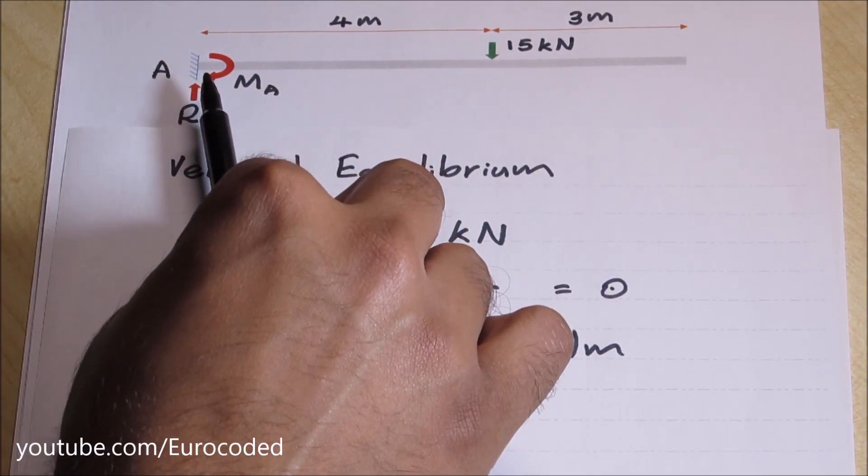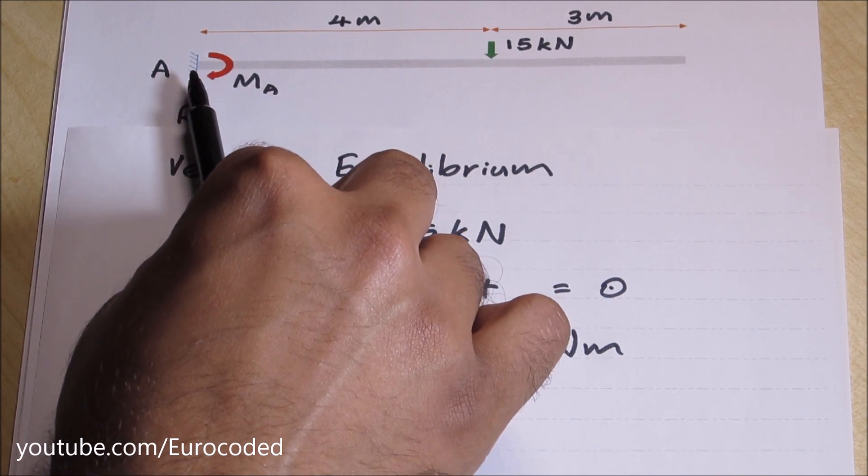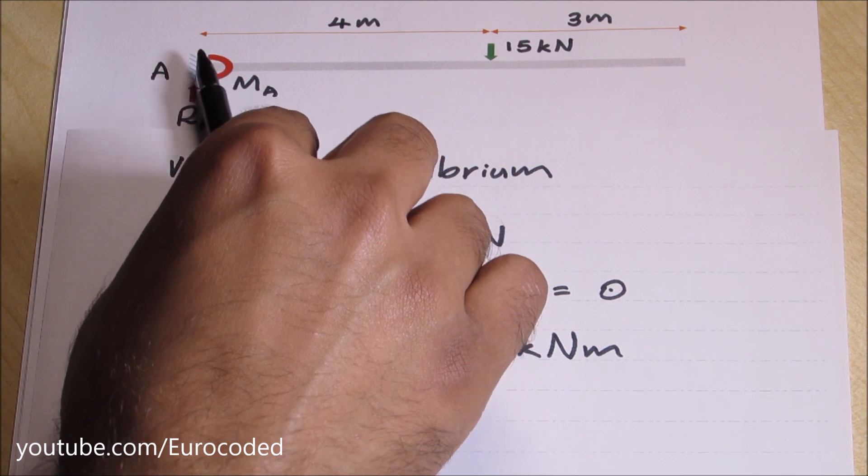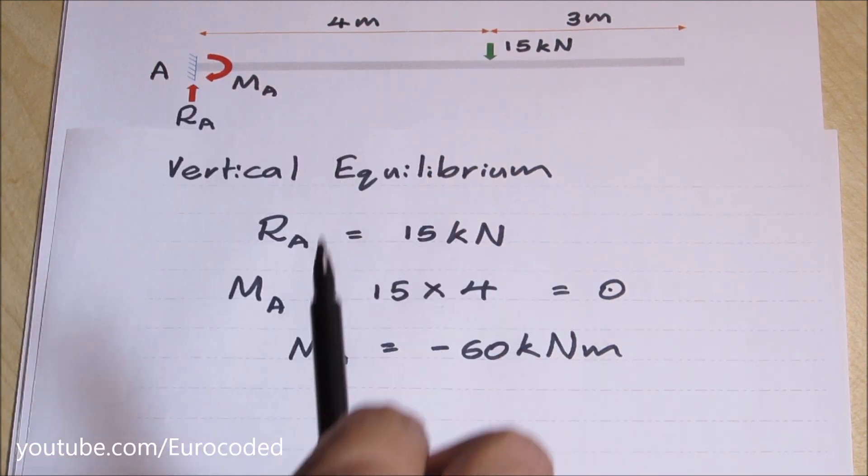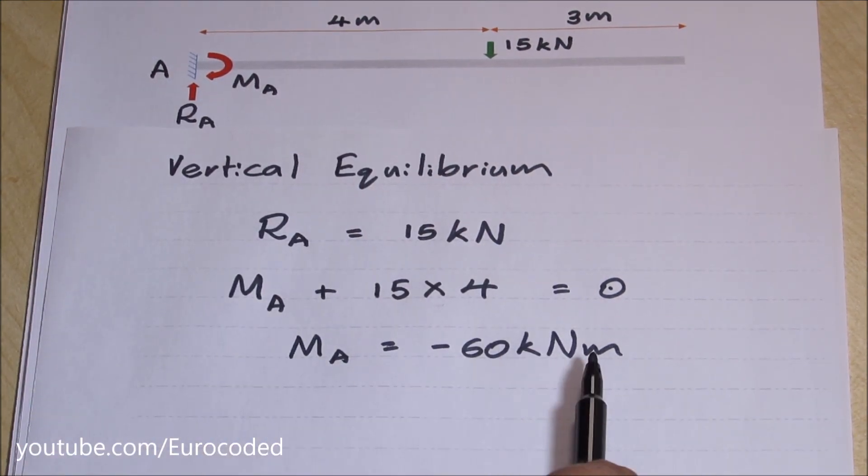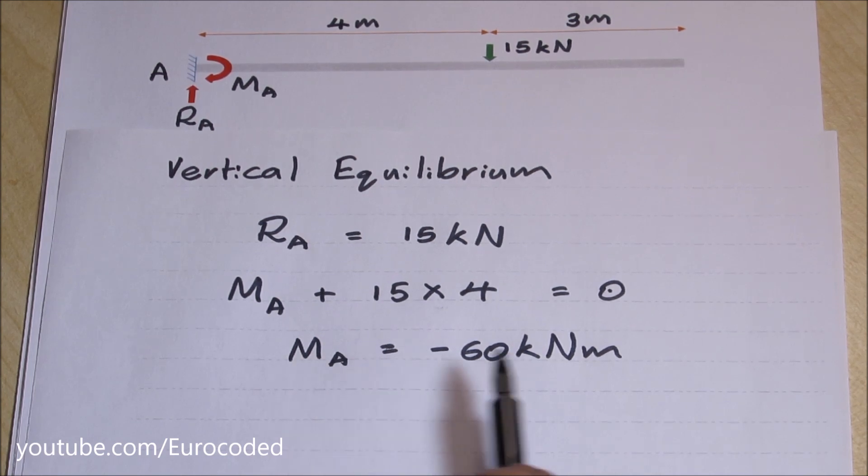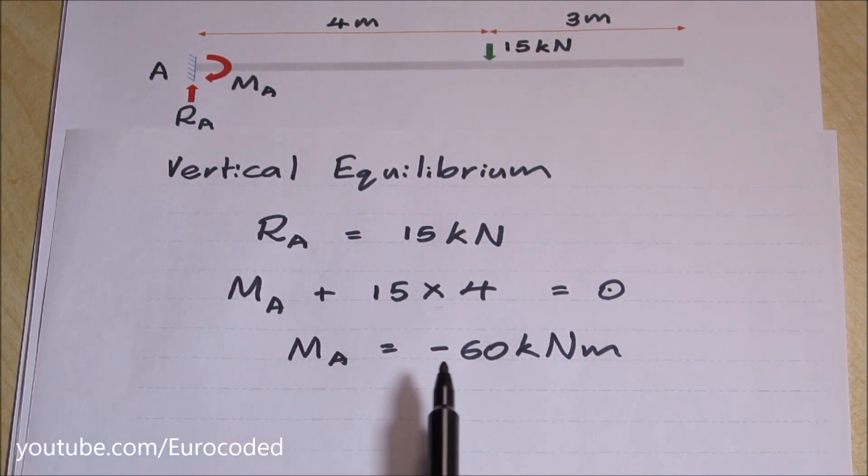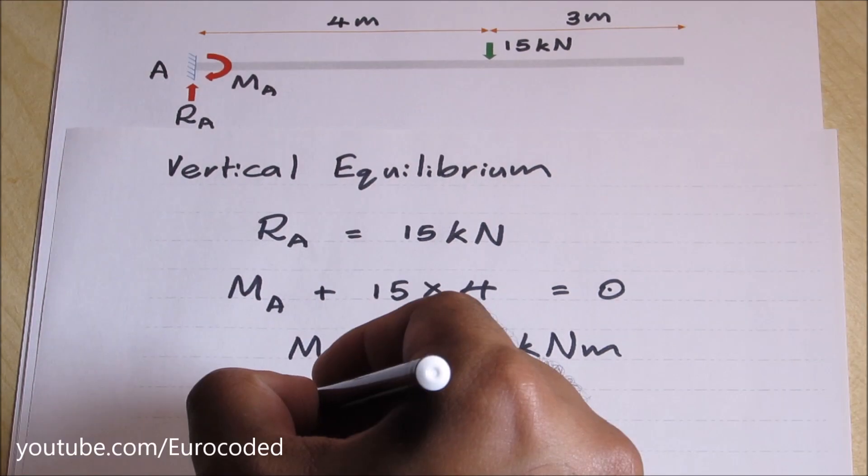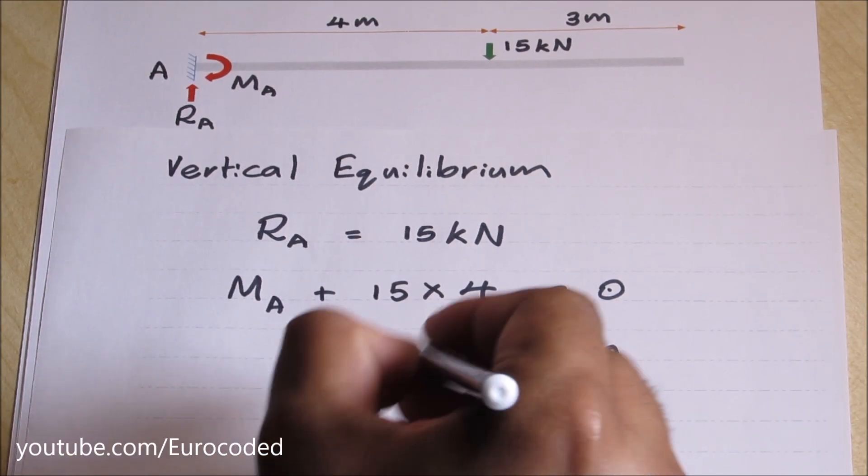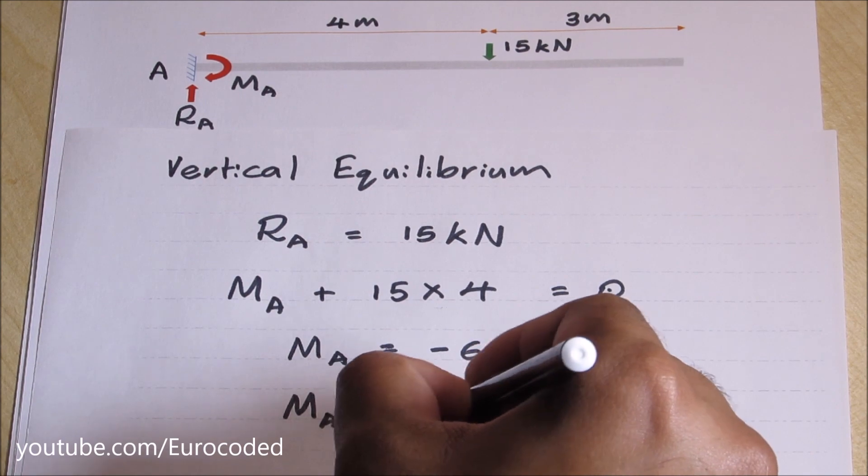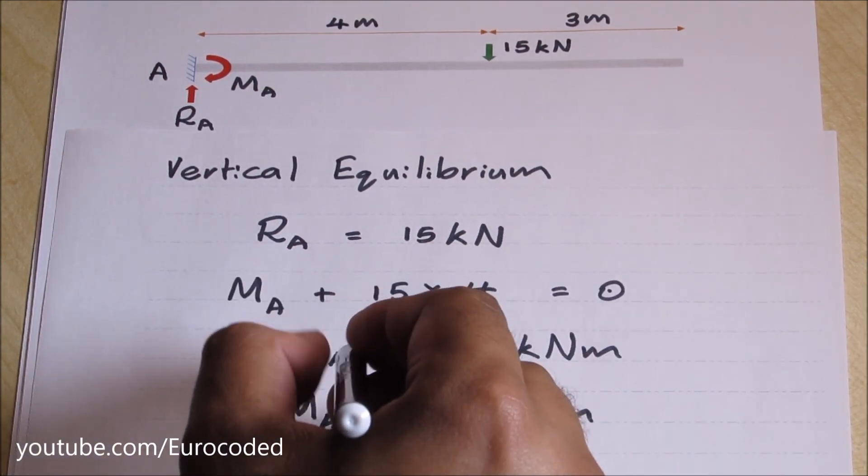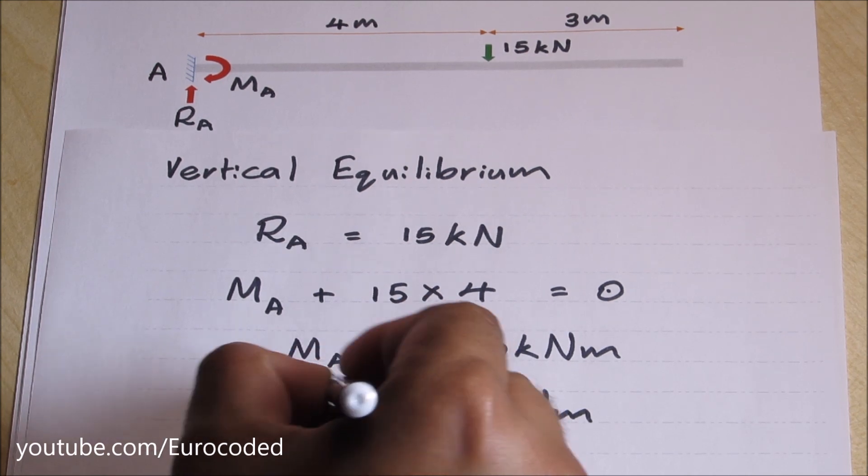The typical sign convention you would use here would be an anti-clockwise MA moment. However I noted this as a clockwise moment just to show you this sort of result. So what does this mean? This means the moment is actually in the opposite direction. Hence MA is 60 kN meter but an anti-clockwise moment.